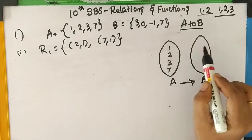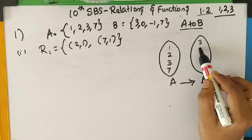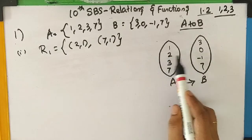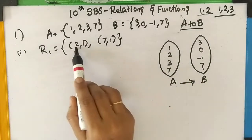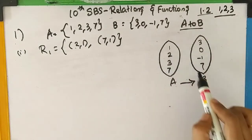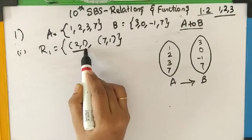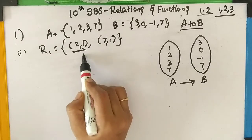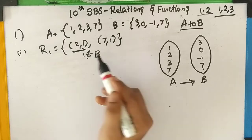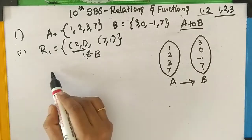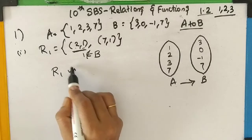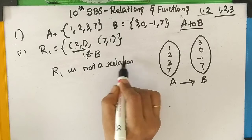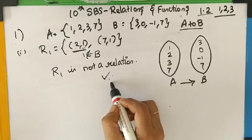R1 = {(2,1), (7,1)}. The first ordered pair is (2,1): 2 is in set A, but 1 is not an element of set B. The second ordered pair is (7,1): 7 is an element of A, but 1 is not an element of B. Therefore, R1 is not a relation from A to B.